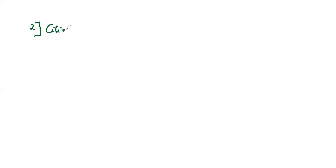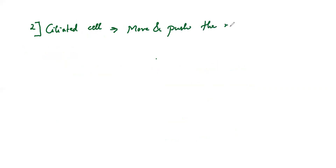The second type of cell is the ciliated cell. The major function of ciliated cells is to move and push the mucus. Ciliated cells have small tiny cilia, which are nothing but tiny hairs.